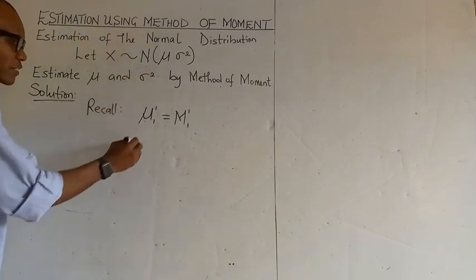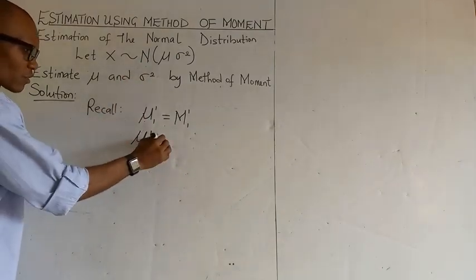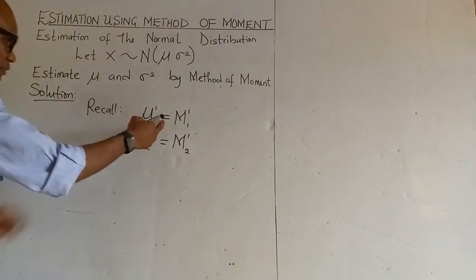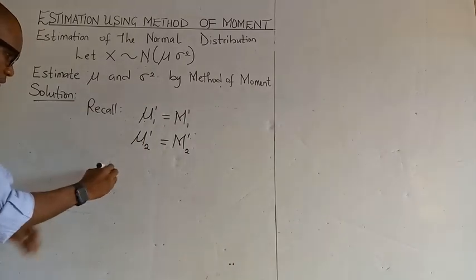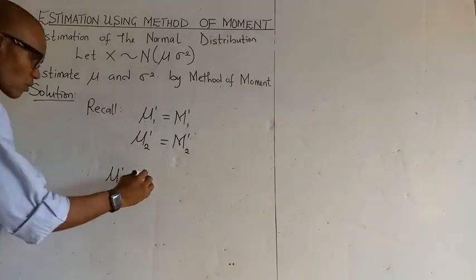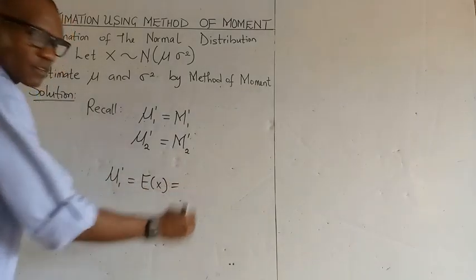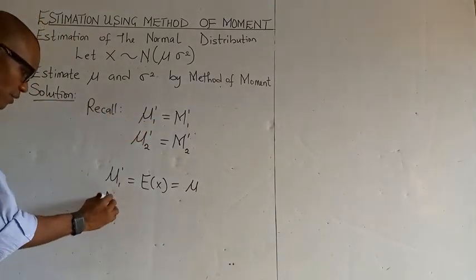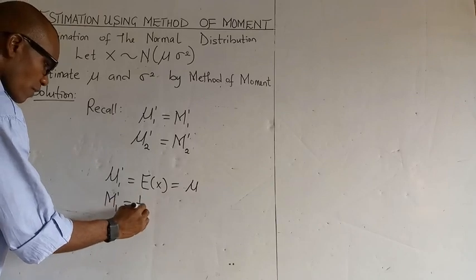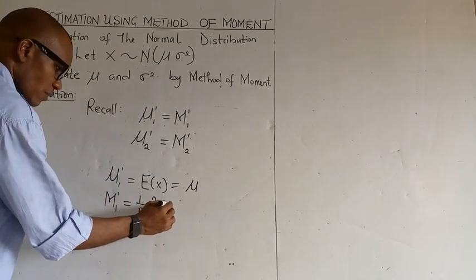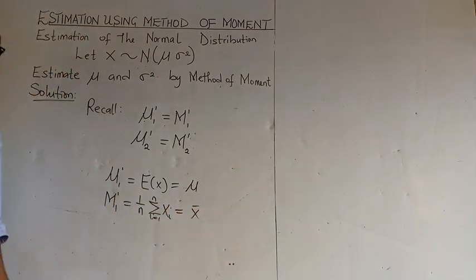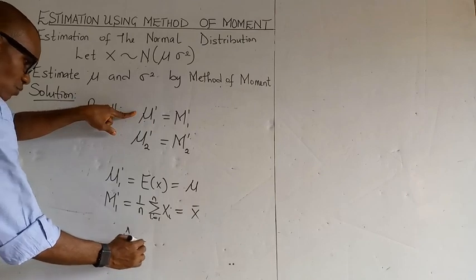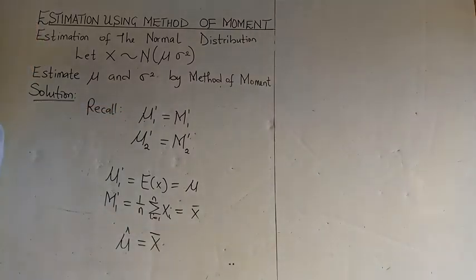Also, since we have the variance here, we know that the population mean for the variance is equal to the sample mean. For the first population moment, the expected value of X for the normal distribution is mu. The sample mean is 1 over n, summation from i equals 1 to n of Xi, which is the sample mean. So equating the two together, we have our mu estimate to be equal to the sample mean.